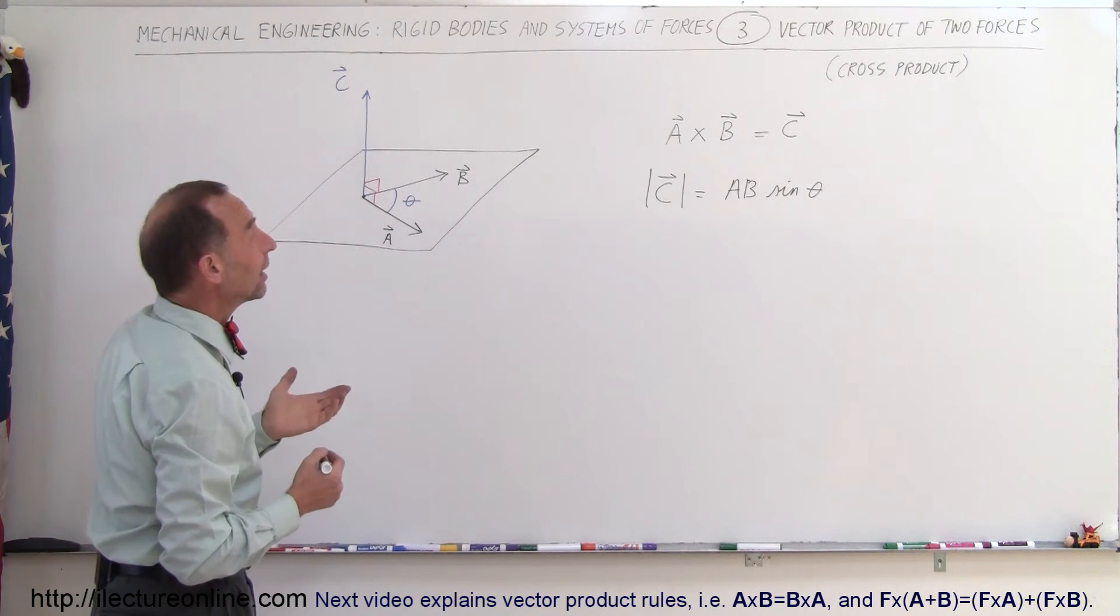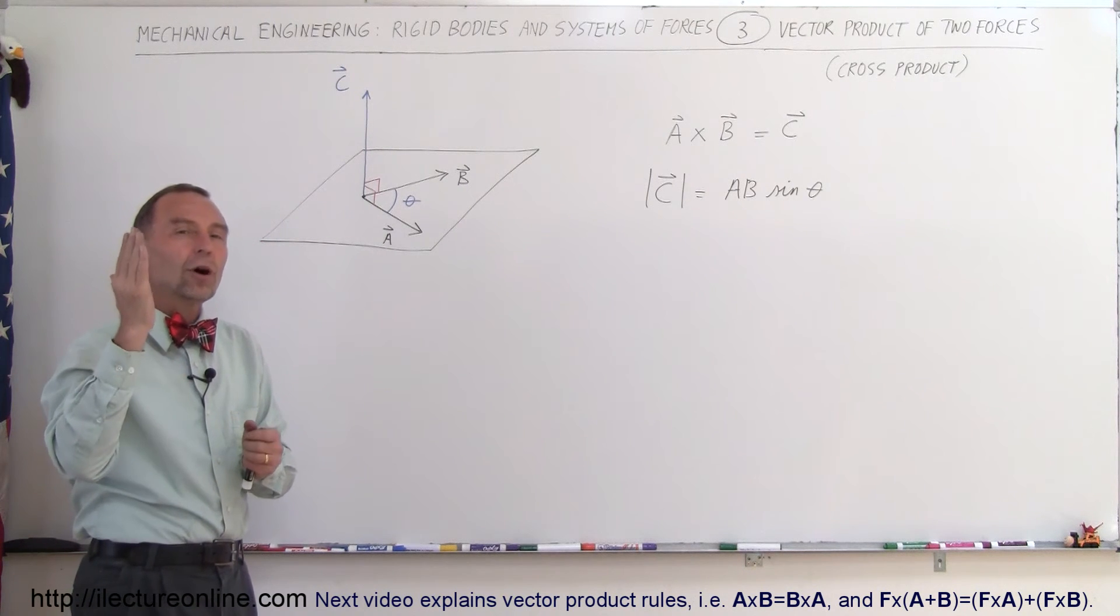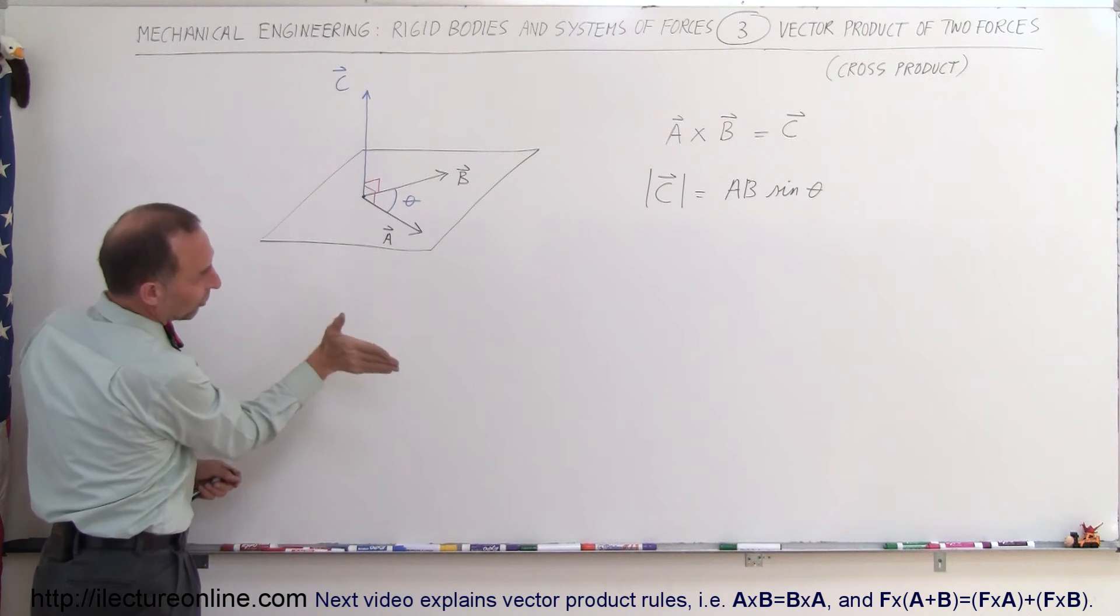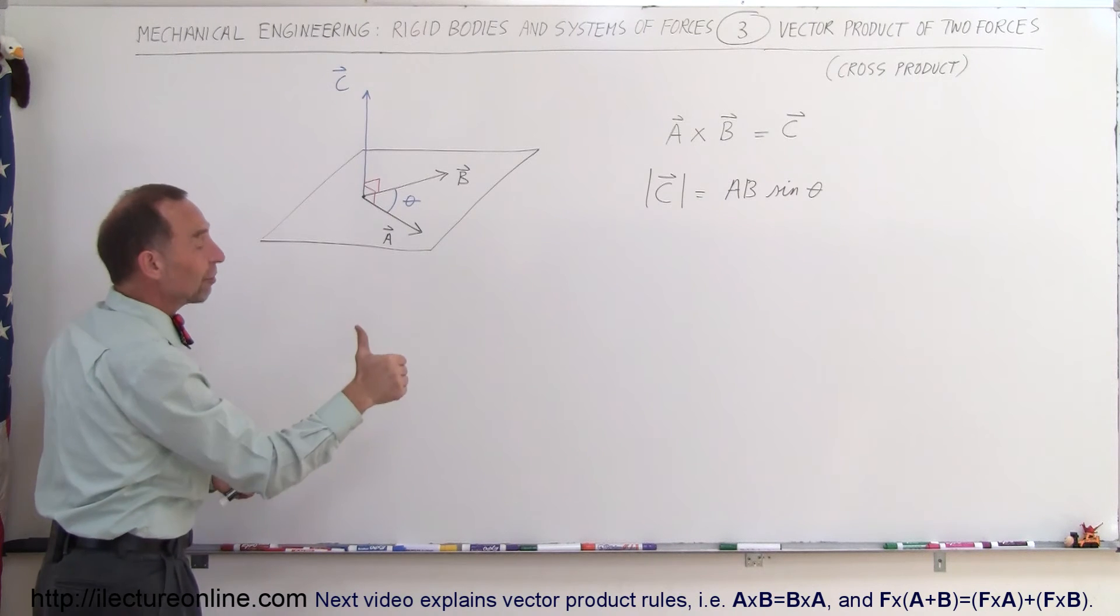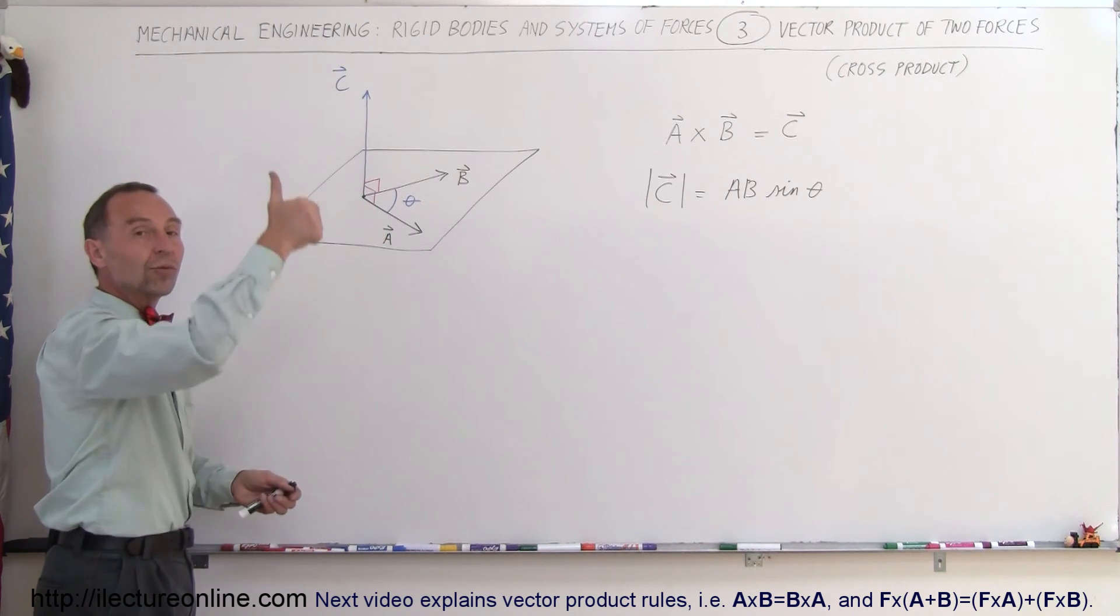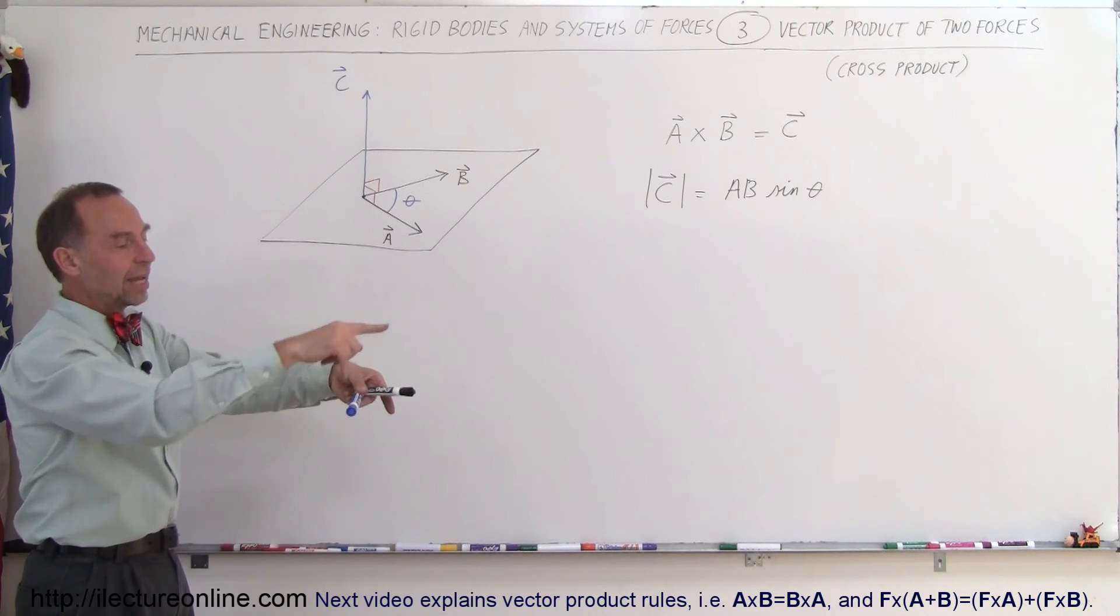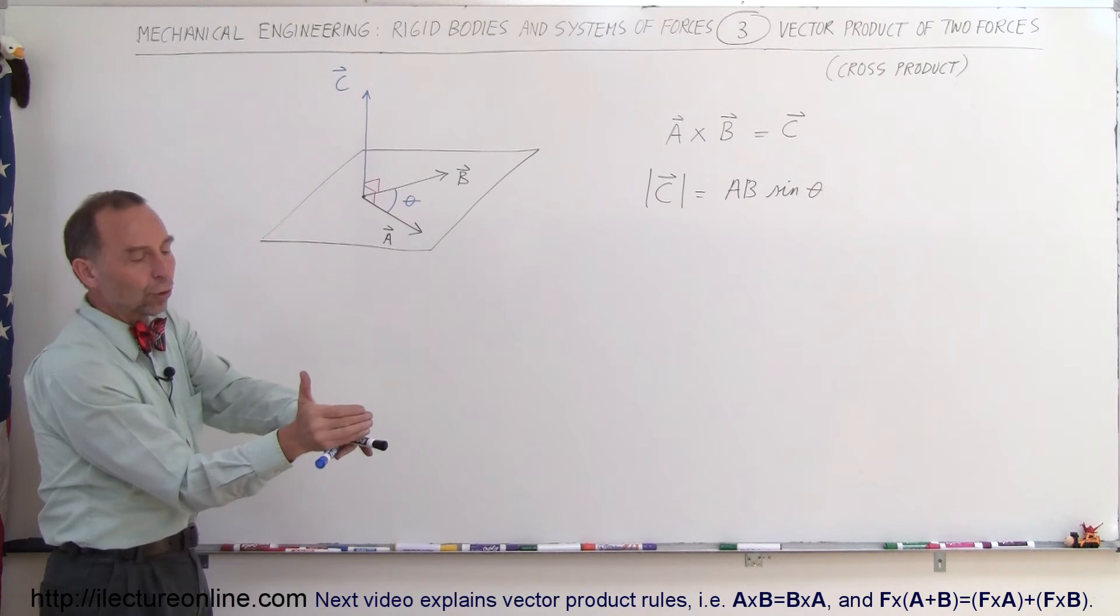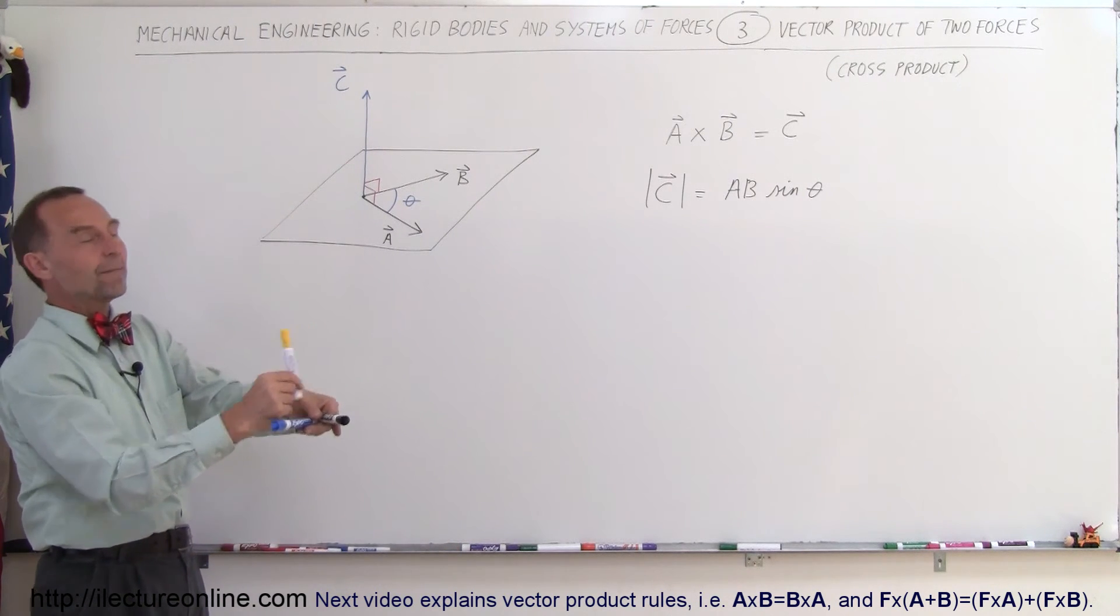Alright, another thing is that to find the direction of C, use what we call the right-hand rule. Take your hand, turn your fingers, point your fingers in the direction of A, then curl your fingers in the direction of B and your thumb will point in the direction of the resultant vector C. So if this is vector A and that's vector B, point your fingers in the direction of A, then curl your fingers in the direction of B and your thumb will point in the direction of C.